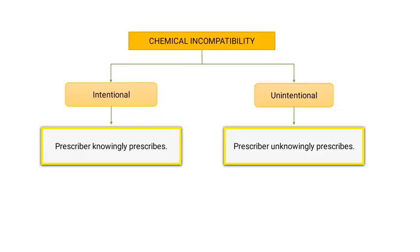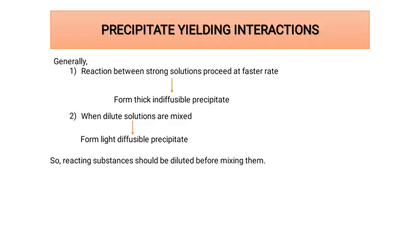The third classification of chemical incompatibility is intentional and unintentional. Intentional chemical incompatibility means the prescriber knowingly prescribes it, while unintentional chemical incompatibility means the prescriber unknowingly prescribes it.